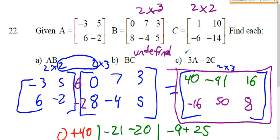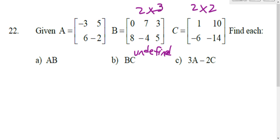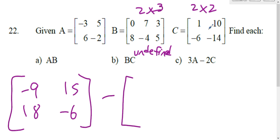And now for the last part, part C. It is 3 times A. So multiply everything in matrix A by 3. So that's negative 9, 15, 18, and negative 6. And we're going to subtract 2 times matrix C. 2 times matrix C. So multiply everything by 2. That's 2 and 20, negative 12 and negative 28. We are subtracting.